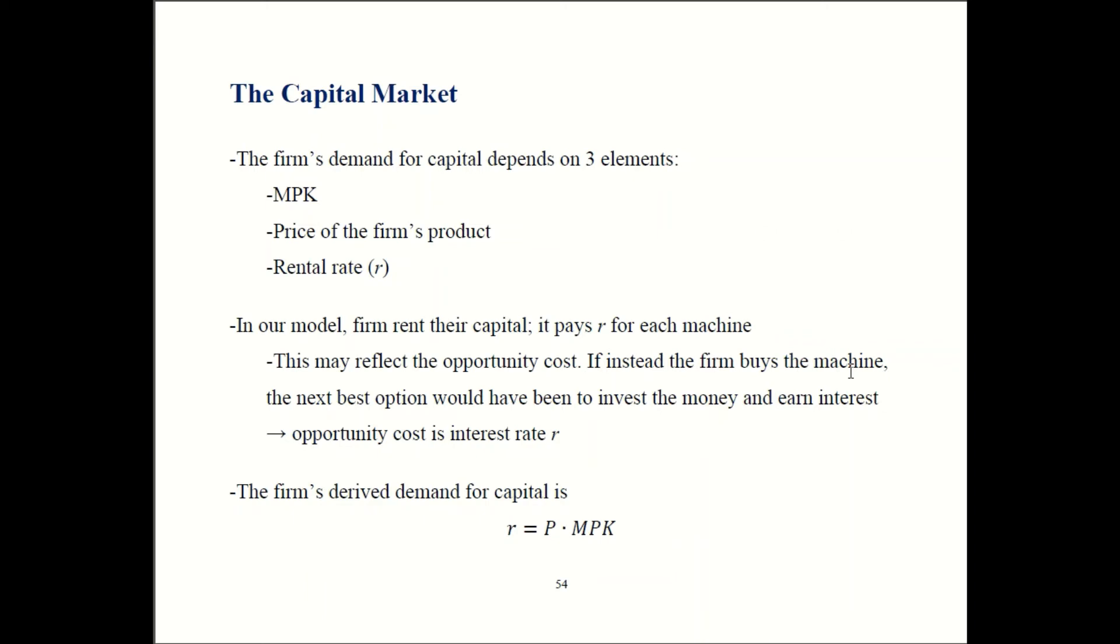Where does the firm's demand for machines come from? Or we might call it the firm's derived demand. Three factors go into that. The firm cares about what is the marginal product of capital, the MPK. How productive is that last machine going to be? They also care about the price of the firm's product. If the price of the firm's product goes up, they're going to want to buy more machines to produce more. When the price goes down, they're going to produce less, and that's going to require them to buy fewer machines. That also plays a role in the firm's demand for capital.